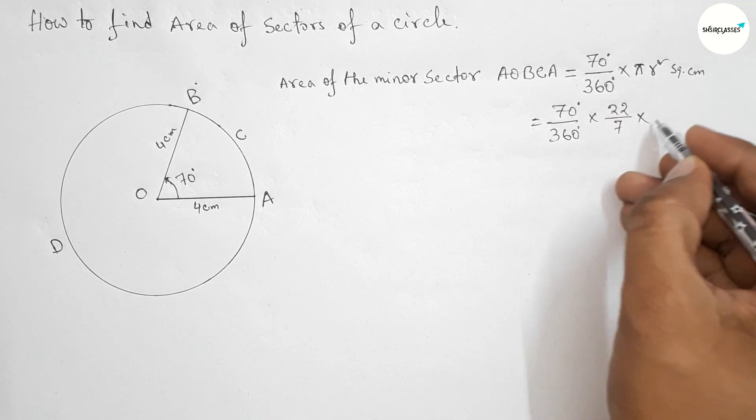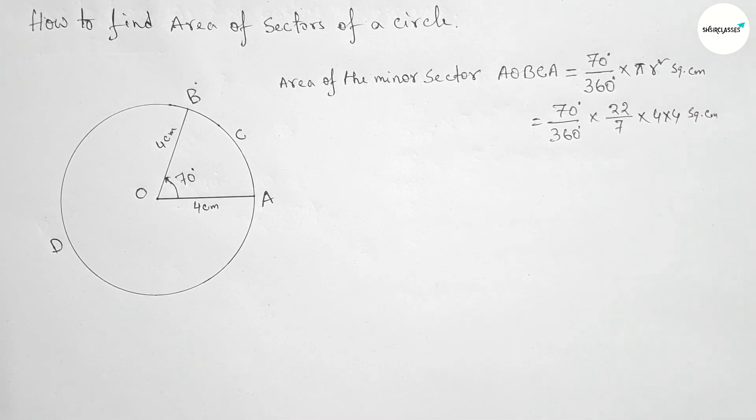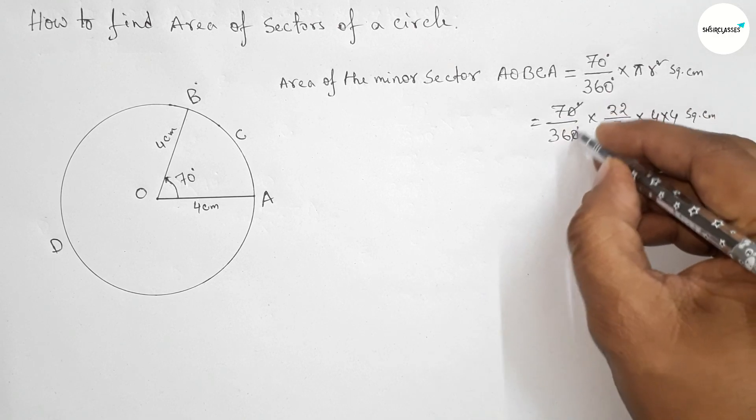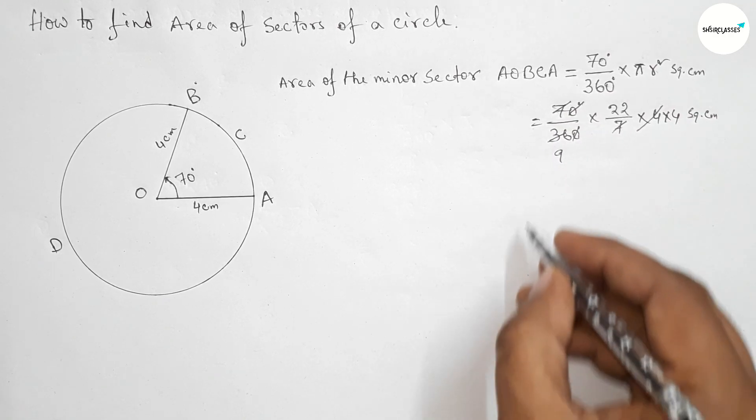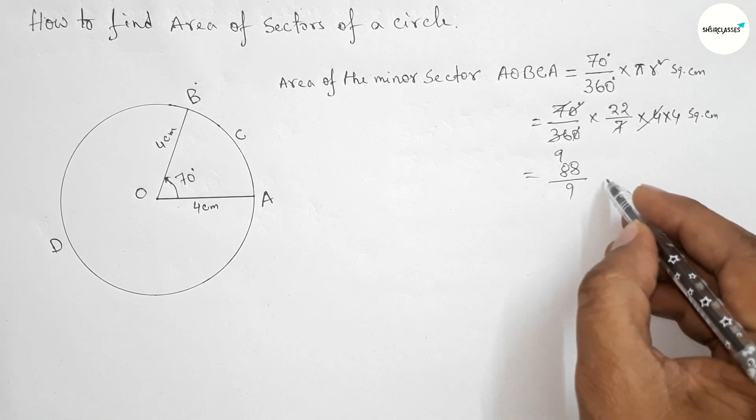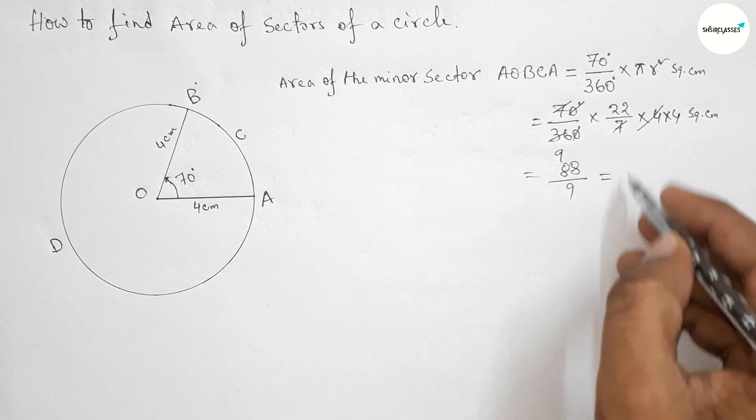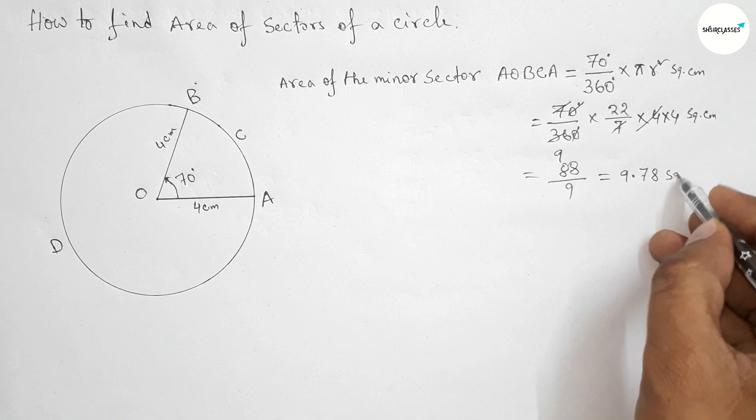Now calculate this. First, cancel both zeros up and down. By calculating, this is 88/9, so this is approximately 9.78 square centimeters.